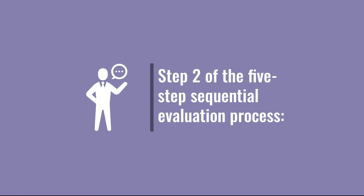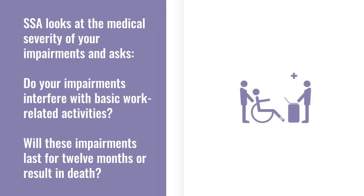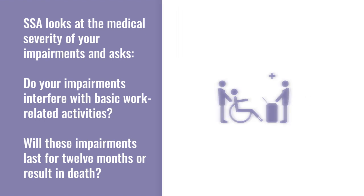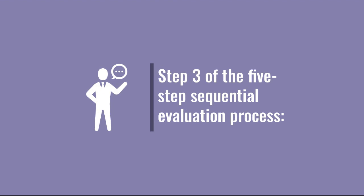Let's discuss step 2 of the five-step sequential evaluation process. Step 2 considers the medical severity of your impairments — specifically, whether your disability prevents you from working. The impairments must be expected to last 12 months or to result in death. This is called a duration requirement. If this is not the case, the SSA will find you are not disabled. If the SSA determines your impairments are severe, it moves on to step 3.